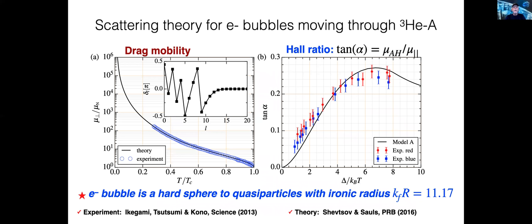The right panel shows the Hall ratio over the same temperature range. Keep in mind that the inputs to this theory are TC, which is about a millikelvin, and the model of the electron bubble is a hard sphere, which can be justified quantitatively. And the normal state mobility, which determines the ionic radius to be 11.17 Fermi wavelengths. The magnitude of the Hall mobility here at the peak corresponds to the effective field that I mentioned earlier of about 10 to the 4 tesla.